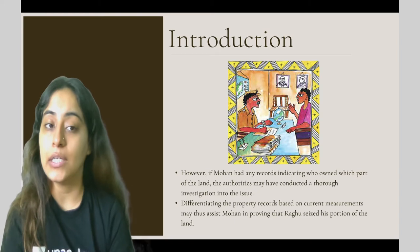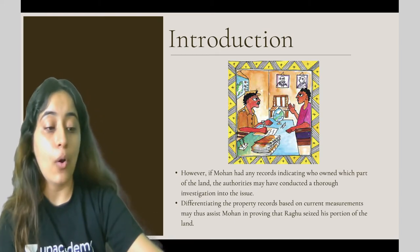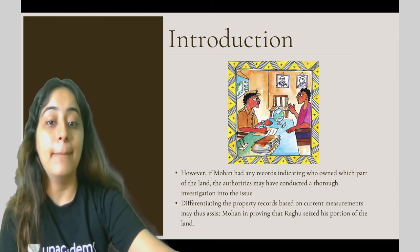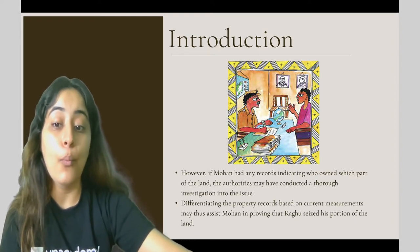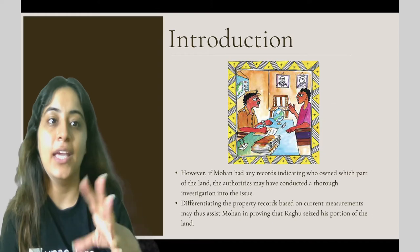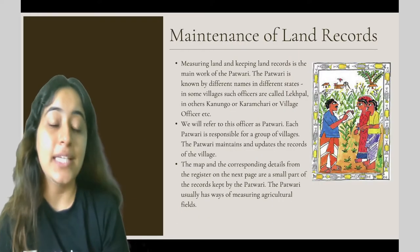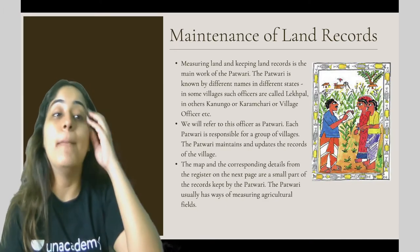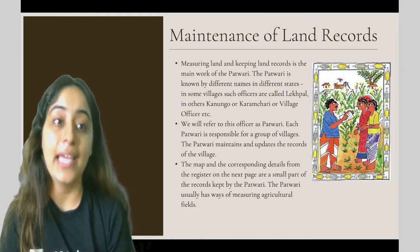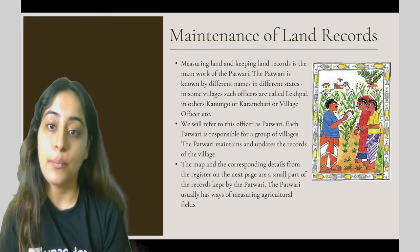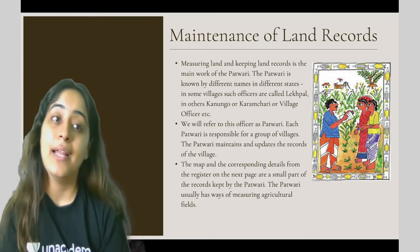If Mohan had land records indicating who owned which part of the land, the authorities could have conducted a more thorough investigation. Differentiating property records based on current measurements would assist Mohan in providing proof that someone had seized his land. This shows us that maintenance of land records is very important — knowing which land belongs to which area helps resolve disputes, as some people try to illegally hoard land.